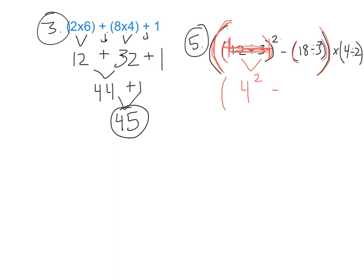I look at my most powerful operations. I have grouping symbols first, then exponents, then multiplication and division in the same step, then addition and subtraction. So I do the exponents first: 3 to the second power is 3 times 3, which is 9. I still have my 4 divided by 2 on the outside and I'm still inside the large outer parenthesis.